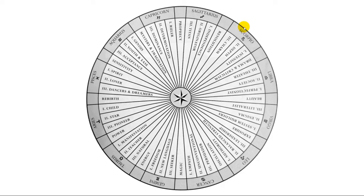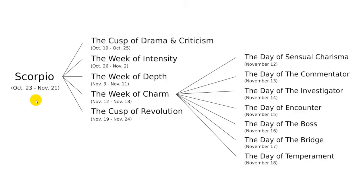Let's take a look at the zodiac period system from another angle by zooming into the Scorpio zodiac and the zodiac period named Charm. Here you see the zodiac Scorpio, which ranges from October 23rd to November 21st. This zodiac is related to five zodiac periods. The first one is called the cusp of drama and criticism. This cusp also includes personality traits from the zodiac Libra, which is the zodiac that comes before Scorpio. The next zodiac period is called the week of intensity, followed by the week of depth, then the week of charm, and finally the cusp of revolution. This cusp also includes personality traits from the zodiac Sagittarius, which is the zodiac that comes after Scorpio.